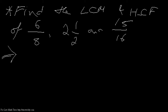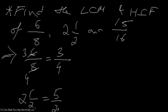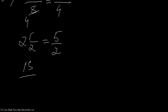When I'm getting these fractional numbers, let me check whether they are in their lowest terms or not. The first number 6/8 is not in its lowest term — the numerator and denominator are both divisible by 2, so it reduces to 3/4. The second number, 2 and a half, is a mixed number; let me change it into an improper fraction: 5/2. The third number, 15/16, remains as it is because it can't be reduced any further.